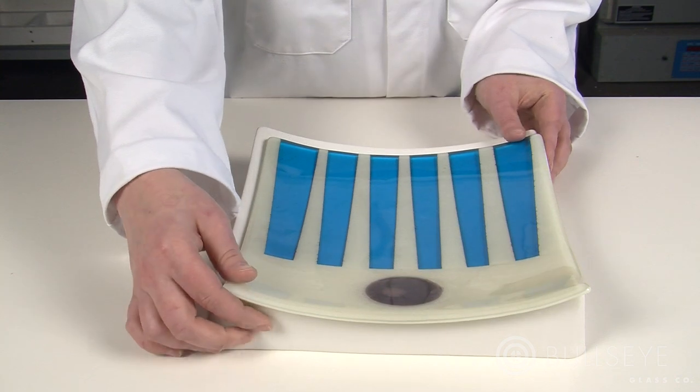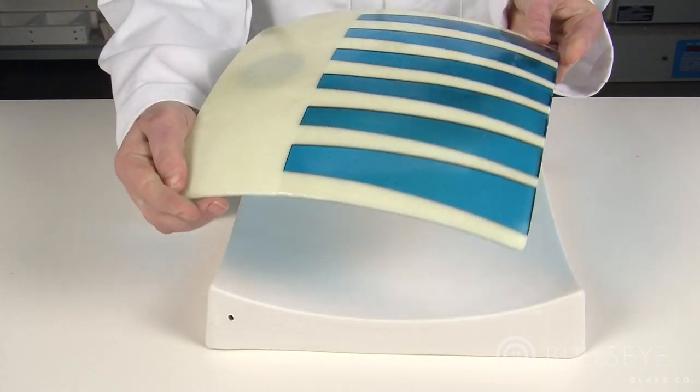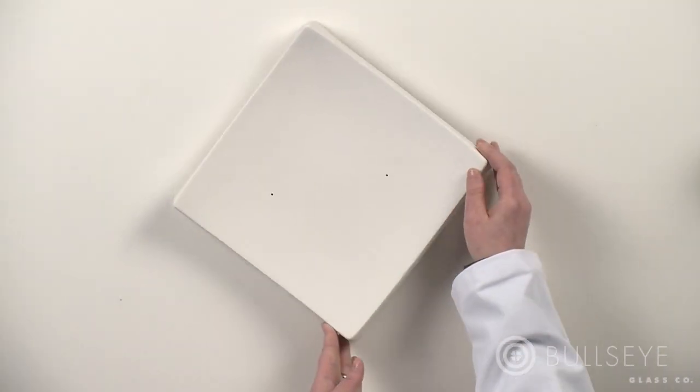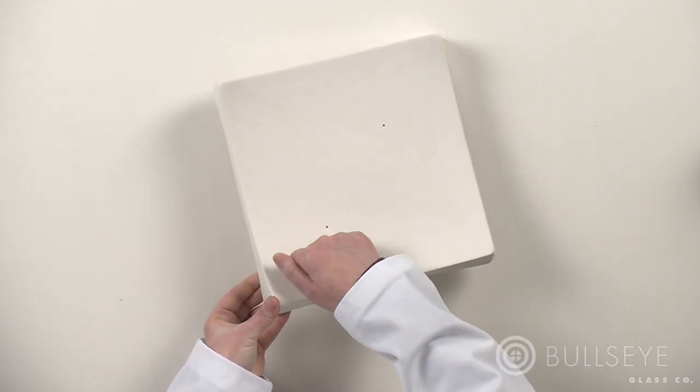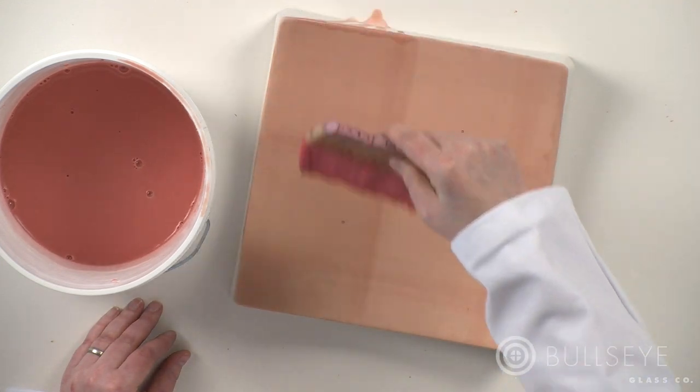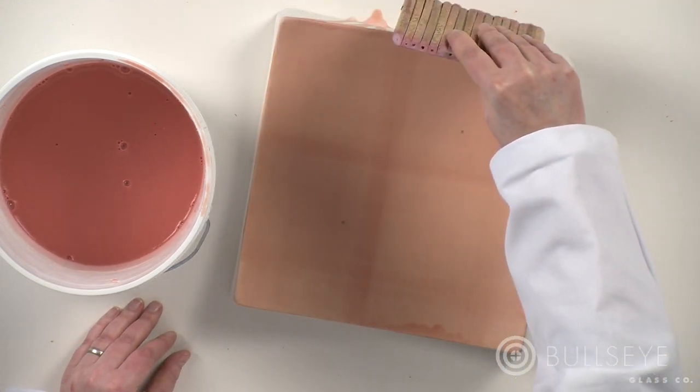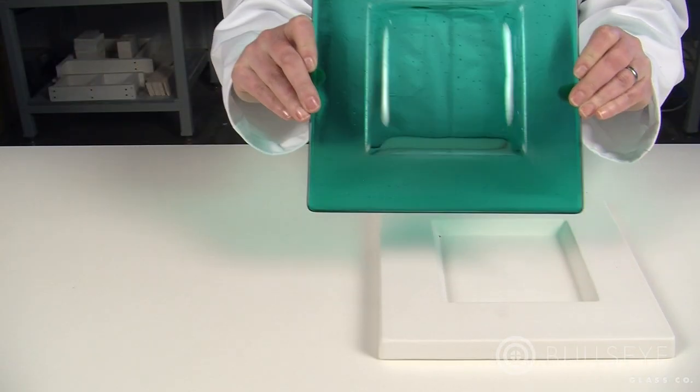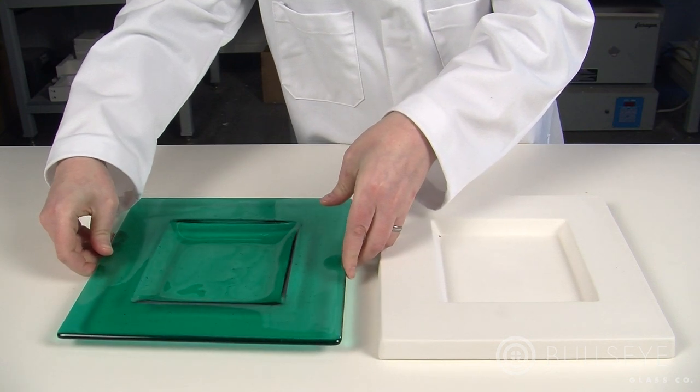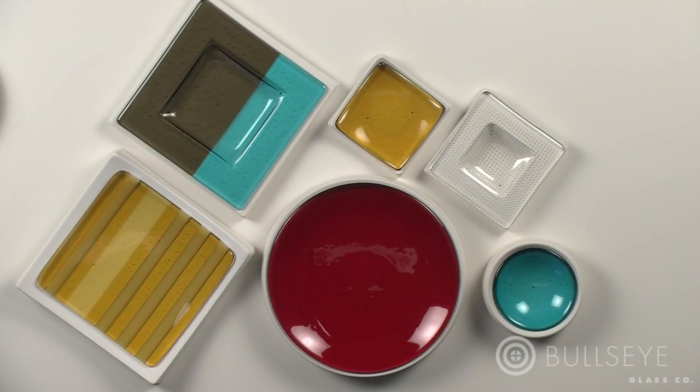In this lesson you will learn the definition of slumping, the characteristics of good ceramic slumping molds, how to prepare a ceramic mold, how to set up a project in the kiln, what to consider in determining a firing schedule, a suggested process temperature range, and how to monitor pieces that are slumping in the kiln.